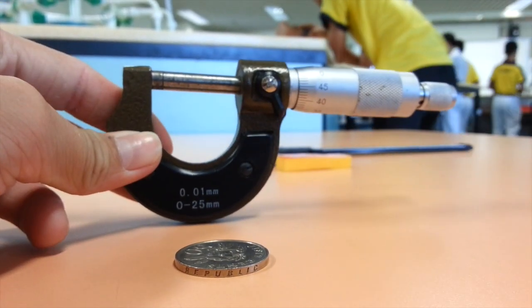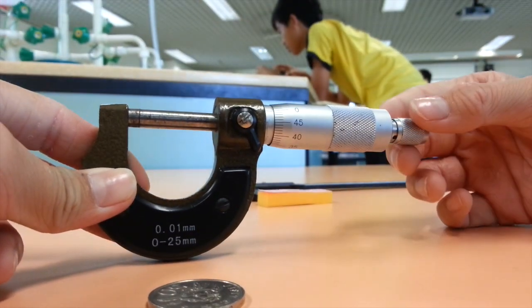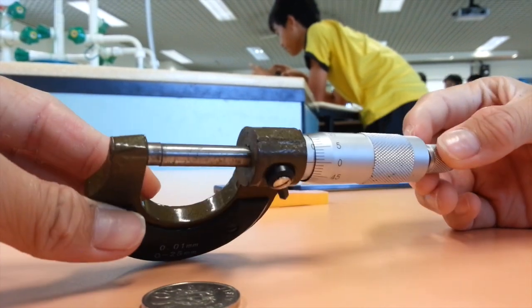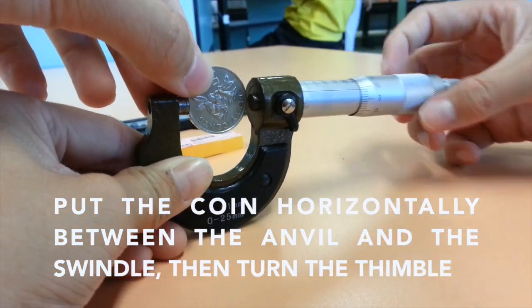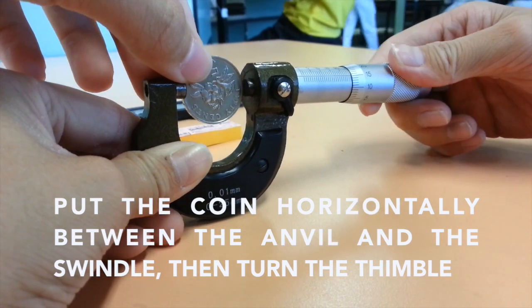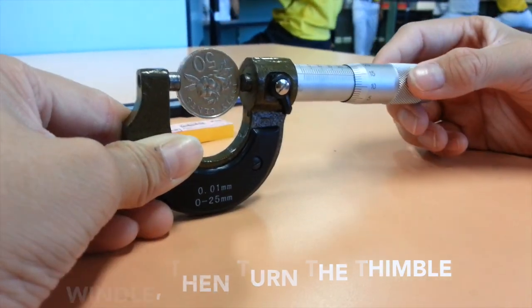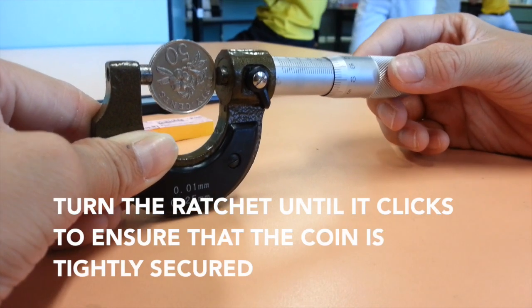As we can see here, since the zero error of micrometer screw gauge is zero, we can proceed with the measurement. We will first put the coin horizontally between the anvil and spindle and turn the thimble until the coin is tightly secured between the anvil and spindle in order to find the diameter of the coin. We also need to turn the ratchet until it clicks.